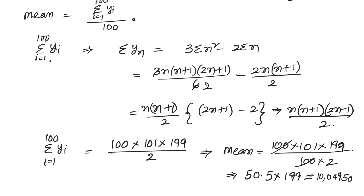This problem can also be solved another way. Once we have an, we can individually find the numbers in the Y series and observe that their differences form an arithmetic progression. Taking that route also yields the nth term of the Y series as 3n squared minus 2n, and applying sigma gives the same final answer of 10049.50.